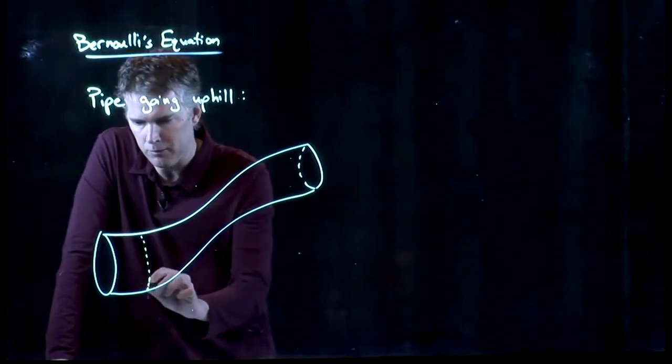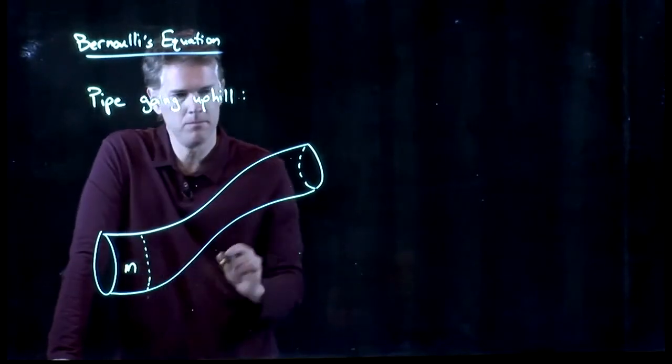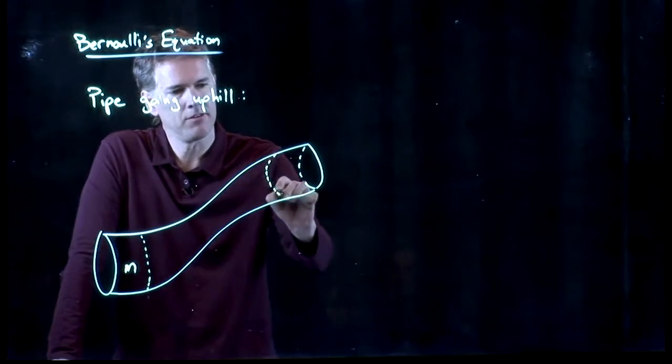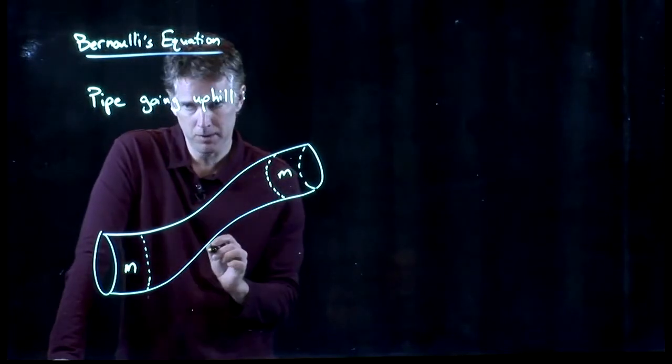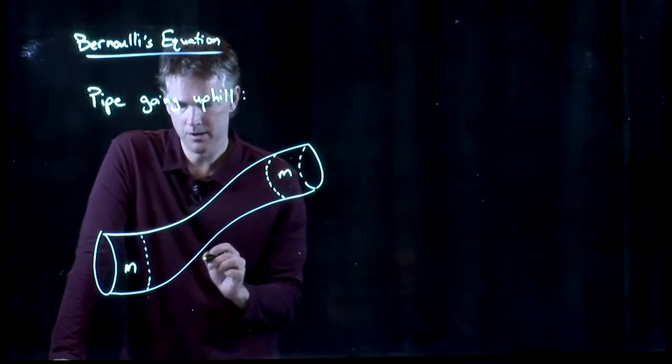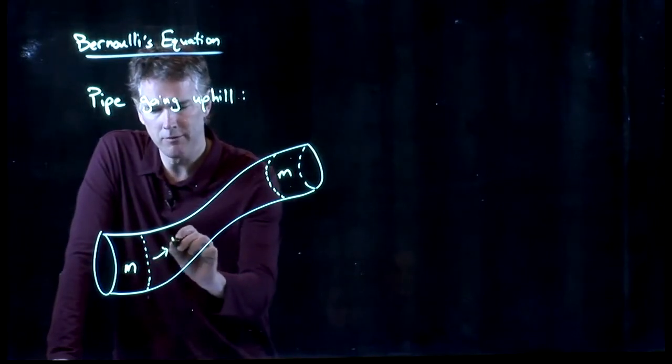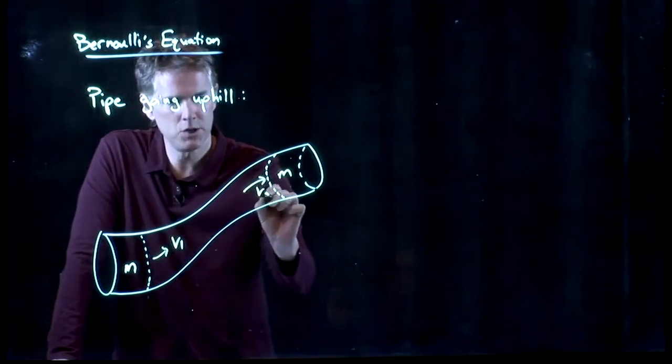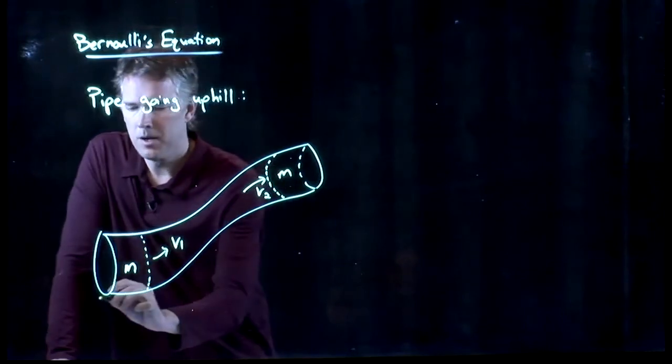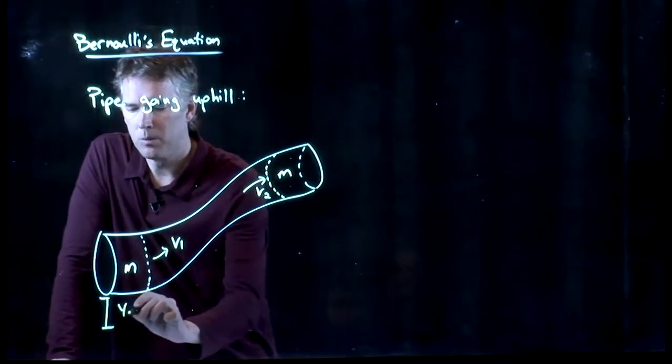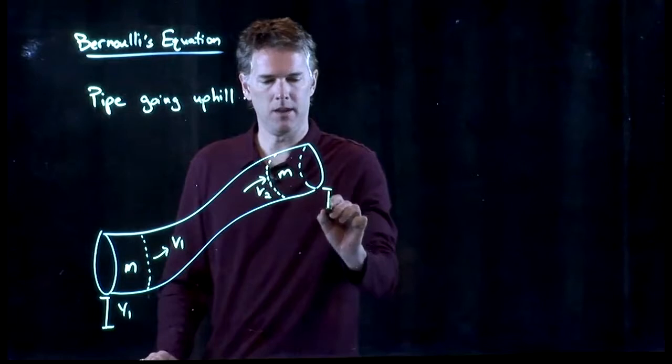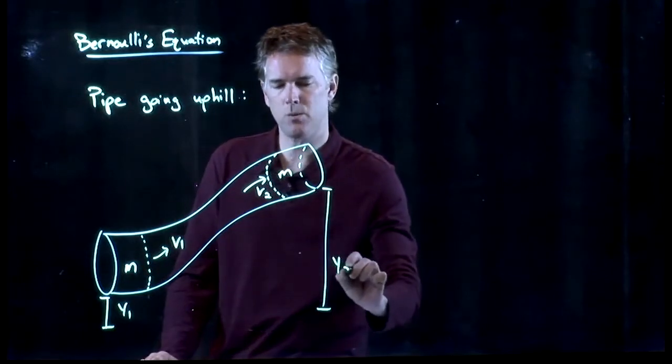We're going to flow the fluid up this hill and let's write down some parameters for this pipe. We said that there's a mass of water, m. That same mass has to exit the pipe if we have continuity. This is moving at v1. This is moving at v2. But now there's a height here, y1, and there's a height here, y2.